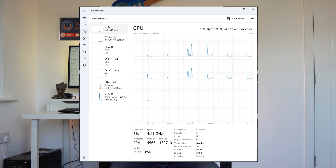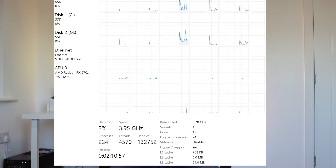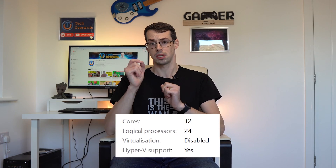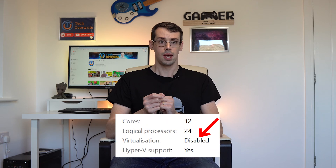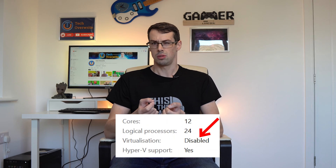Hey everyone! If you've ever looked at Task Manager, you might have seen that CPU virtualization is marked as disabled. Does this mean your CPU is a dud, or is there a genuine reason why it's disabled?